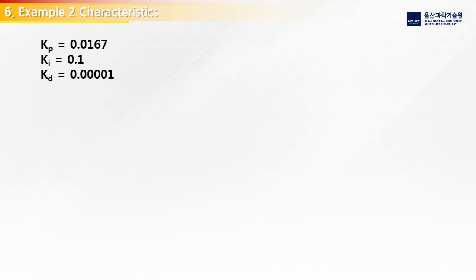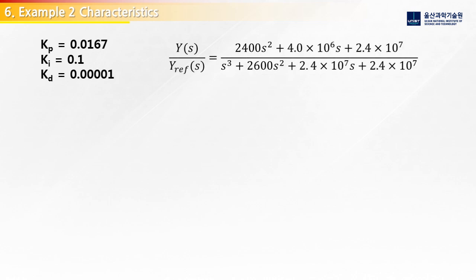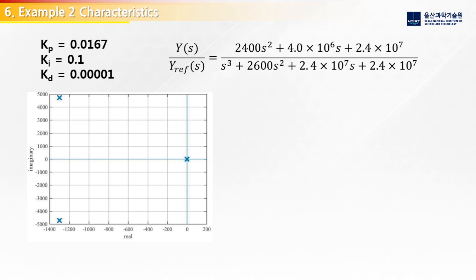To change our system characteristics, we pick new control values that changes our denominator coefficients in the transfer function. We have decreased all of our control value coefficients. Here, you can see the pole locations have changed. Now, the pole on the real axis is very close to zero, but it is still in the left half plane. So, we know our system is stable.